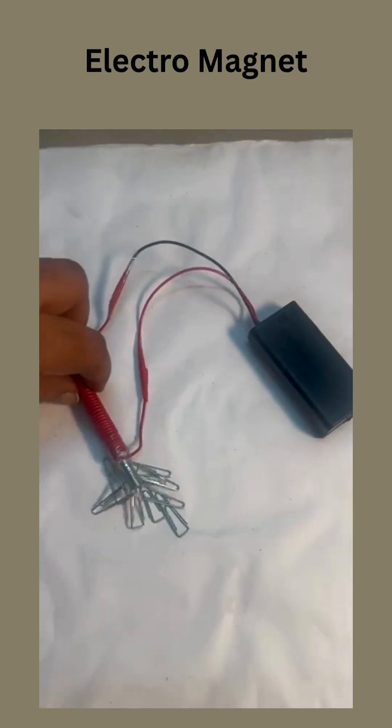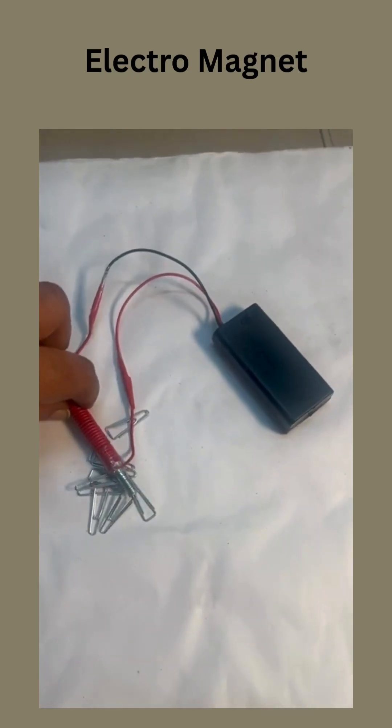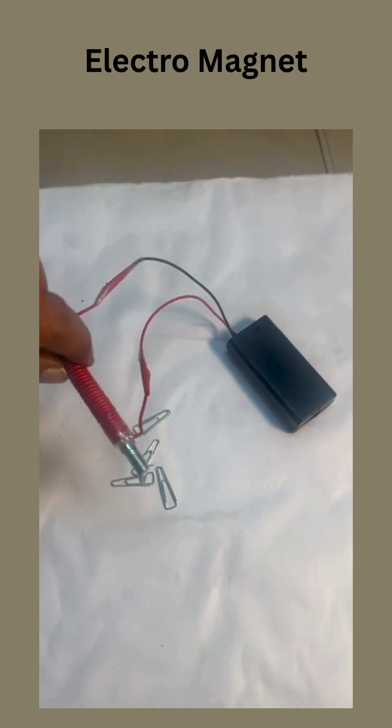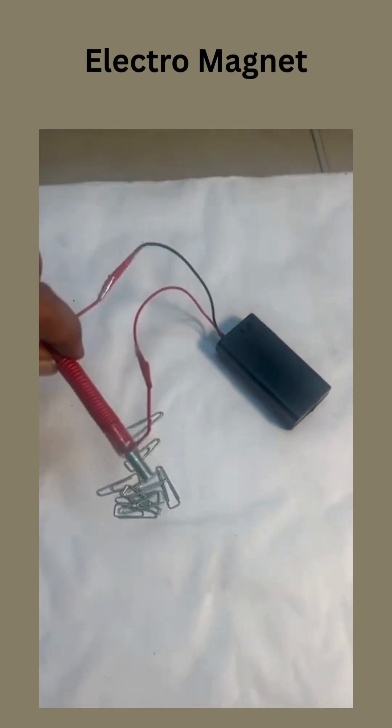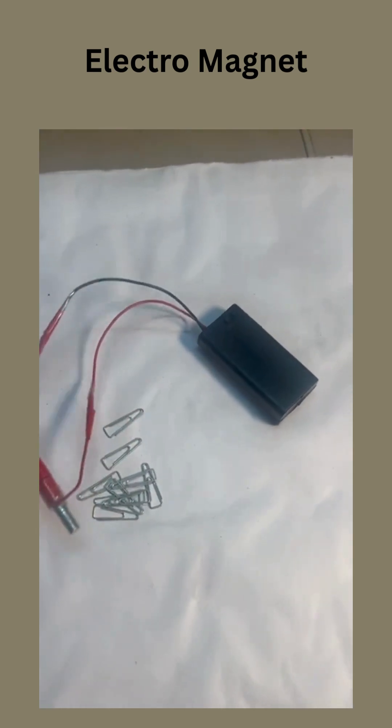Let's make a simple electromagnet. Wrap copper wire around a nail. Connect both ends of the wire to a battery. Try picking up paper clips with the nail, it becomes a magnet. This magnet only works when the electricity is on, so it's called an electromagnet.